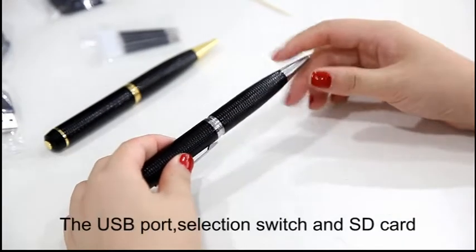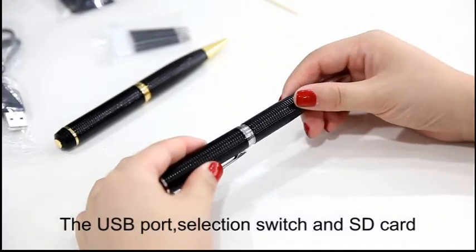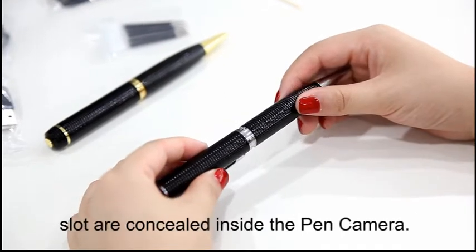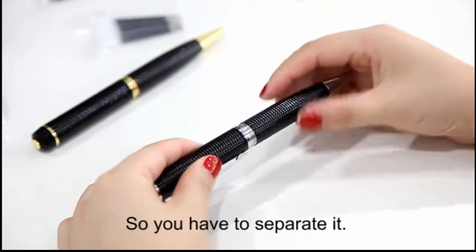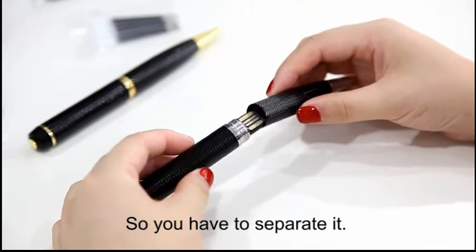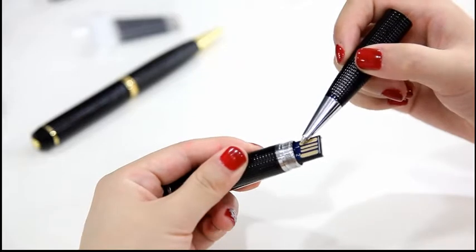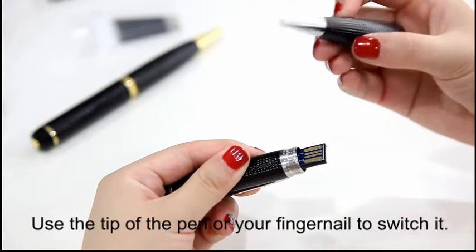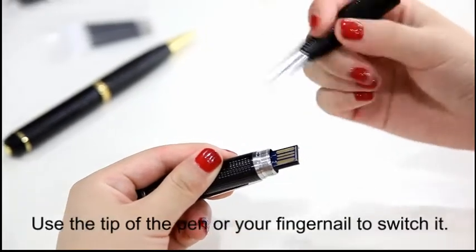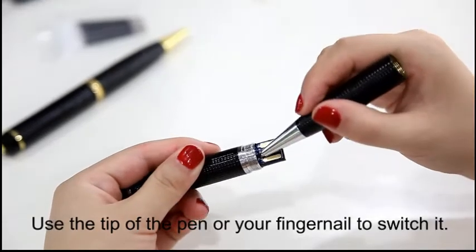The USB port selection switch and SD card slot are concealed inside the pen camera. So you have to separate it, and you can see the switch button is here. You can use the tip of the pen or your fingernail to switch it.